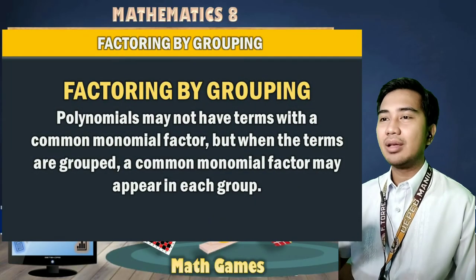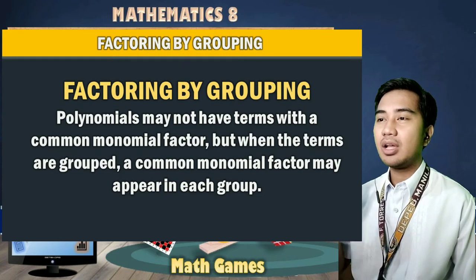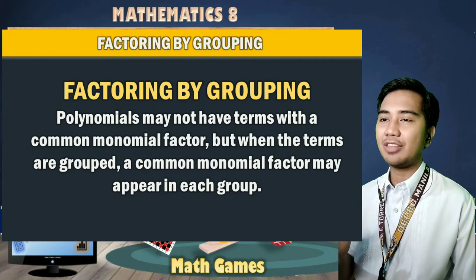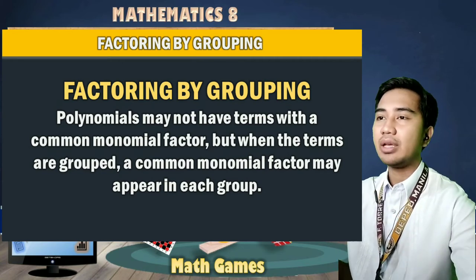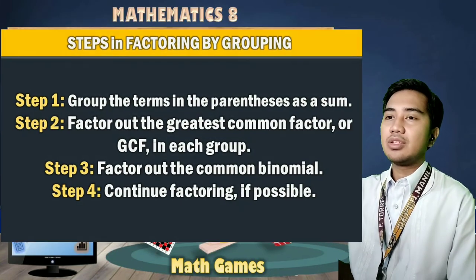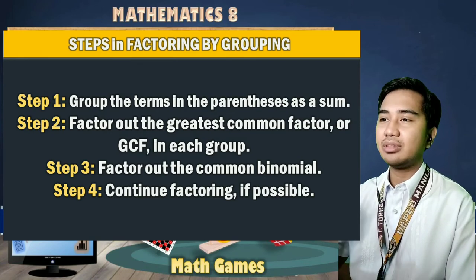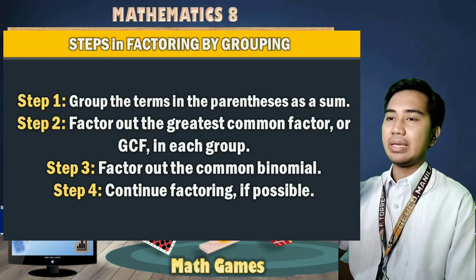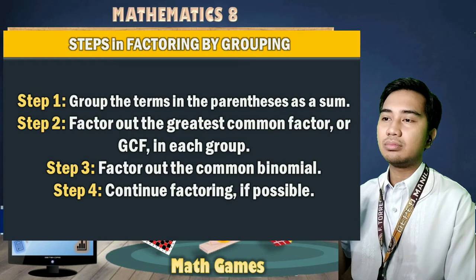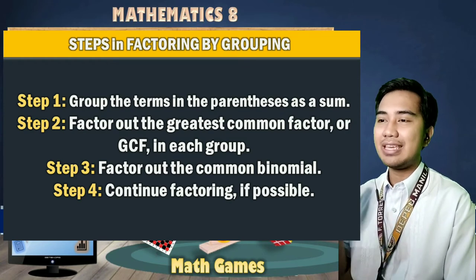Okay, let's have factoring by grouping. Polynomials may not have terms with a common monomial factor, but when the terms are grouped, a common monomial factor may appear in each group. The steps are: first, group the terms in parentheses as a sum. Step 2, factor out the GCF in each group. Step 3, factor out the common binomial. And last, continue factoring if possible.